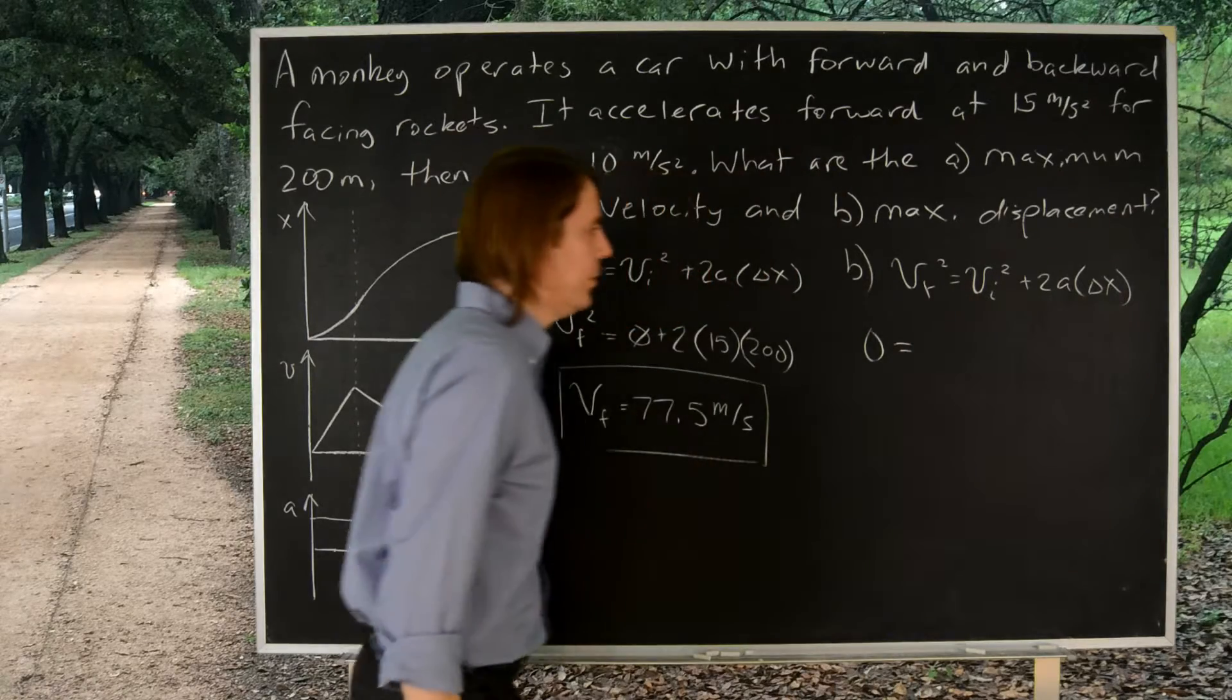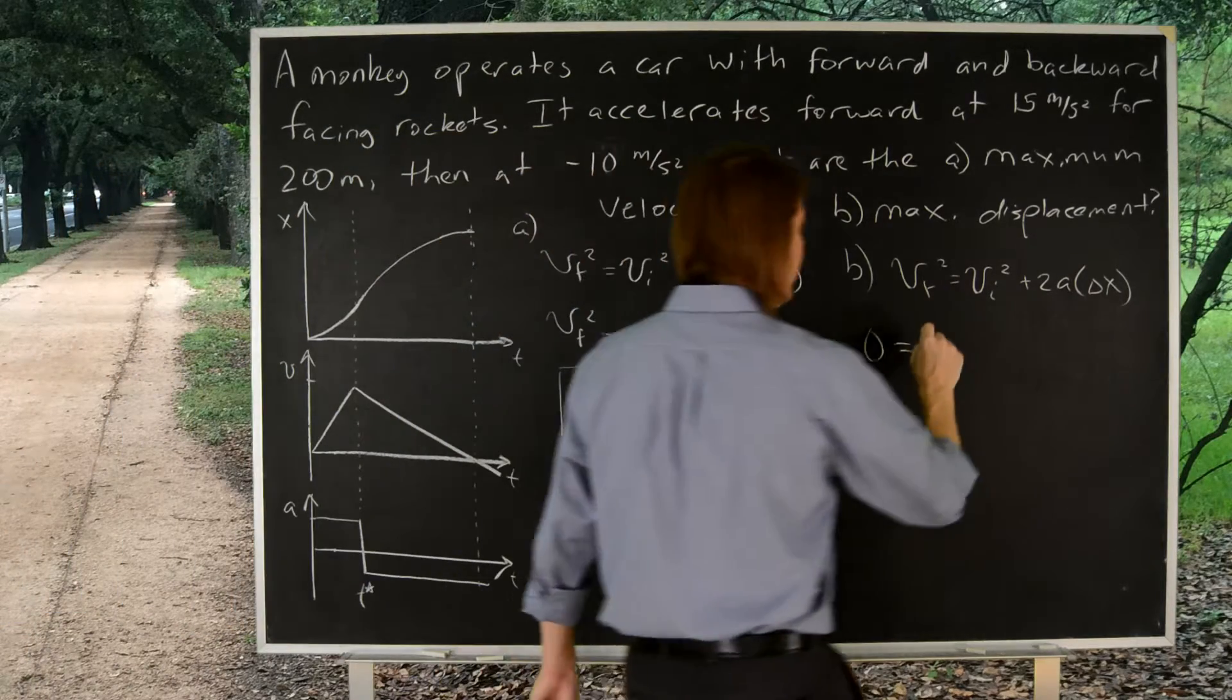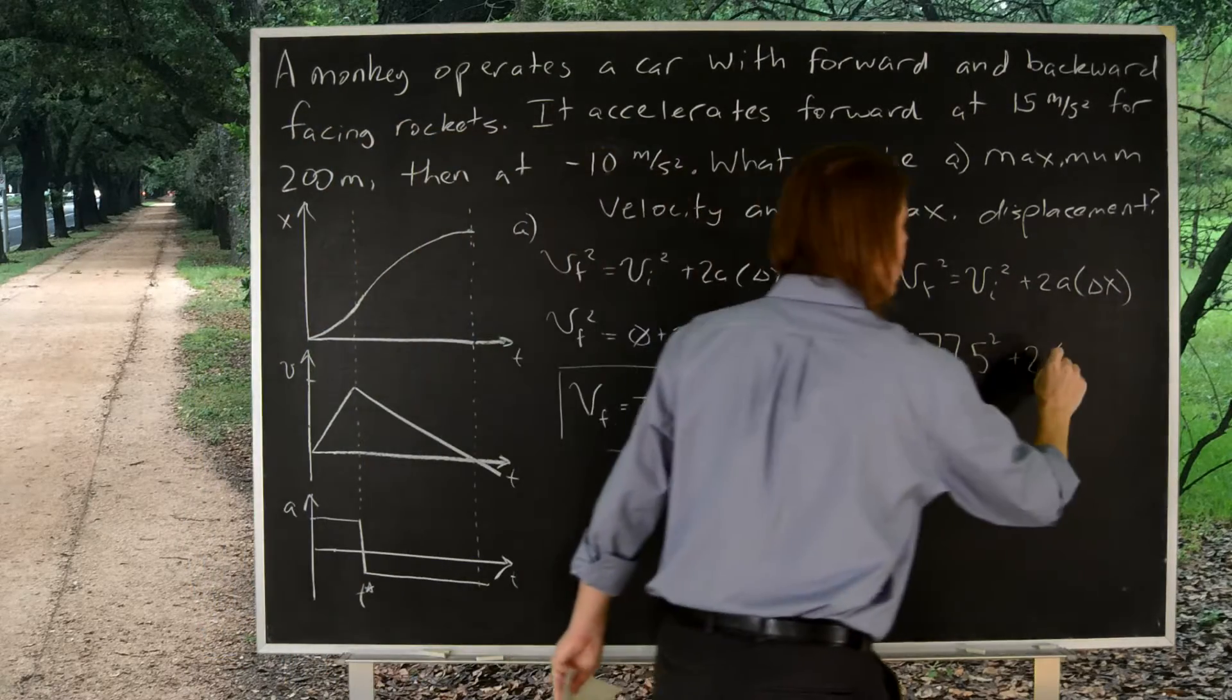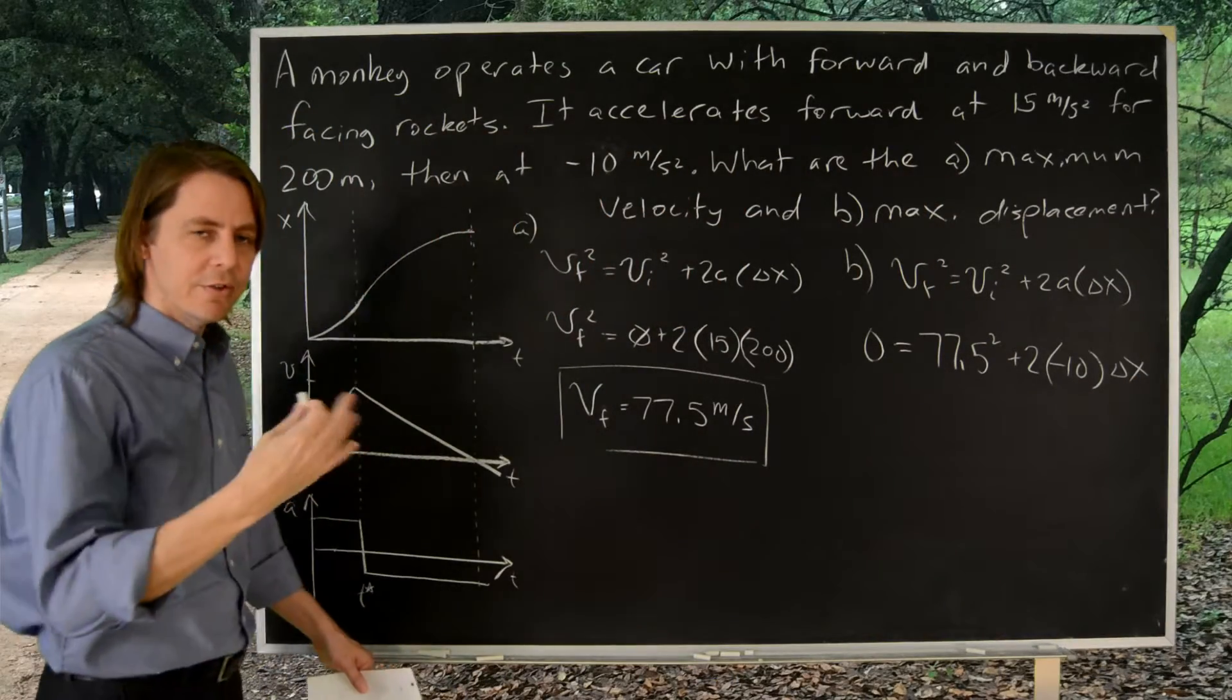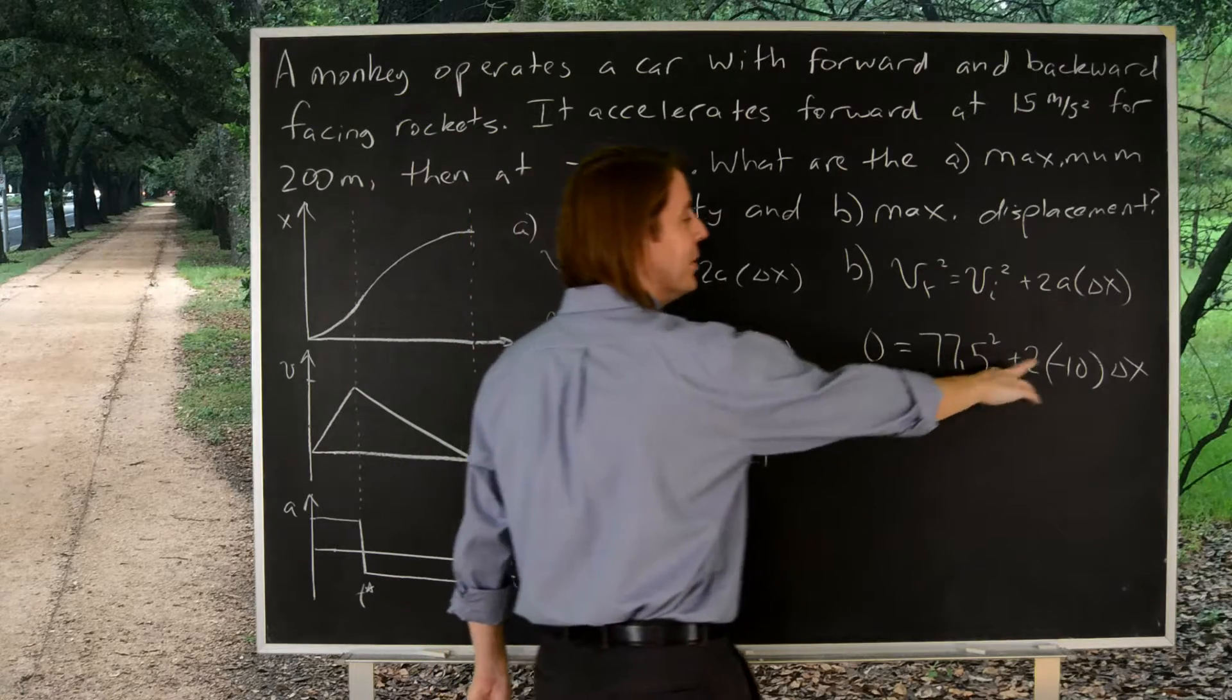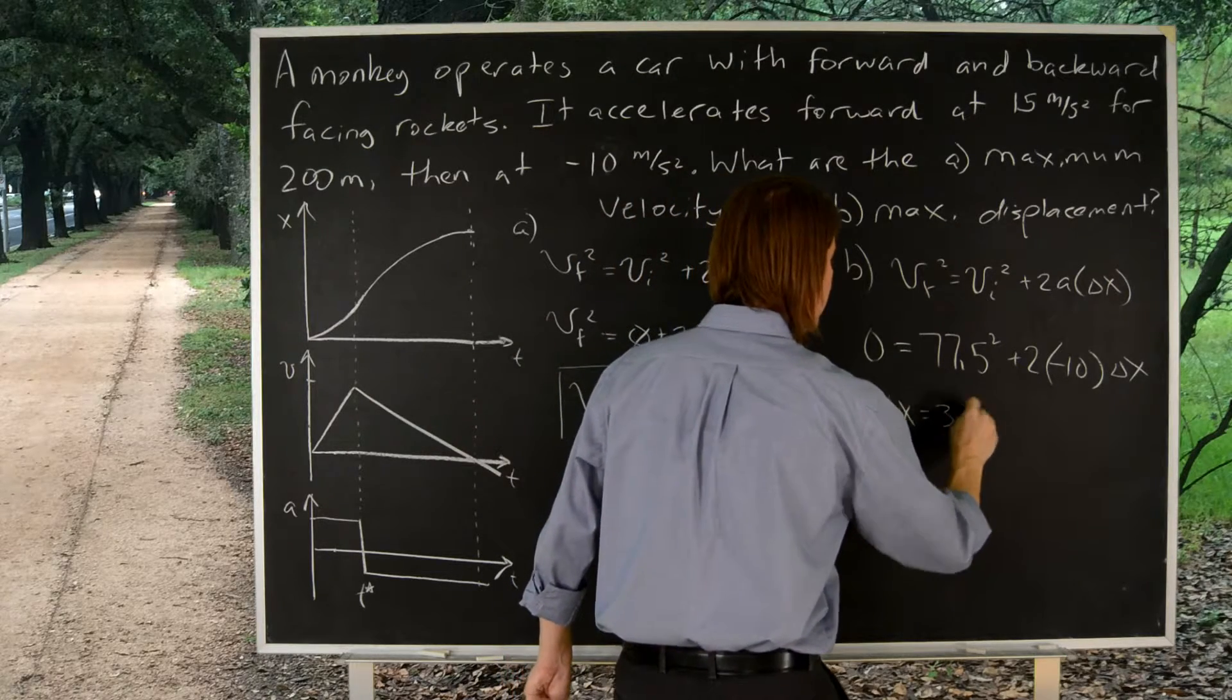So for this part of the problem, the final velocity - we decided the whole point is when it gets to zero. So zero squared is zero. The initial velocity, it started at, we calculated that last time, 77.5 squared plus 2. What was the acceleration? Minus 10. And then delta x. In this case, the delta x, the displacement, is what we're looking for. So you square that, and it's actually 6,000 again like you had before, and you divide, bring it over here, and then everything's positive, and you divide by 20, and you get the delta x for this part is 300 meters.